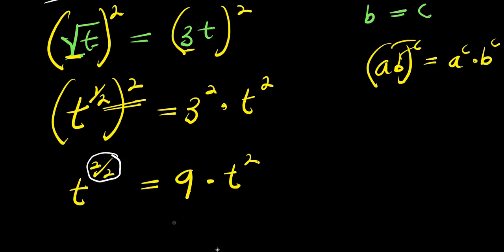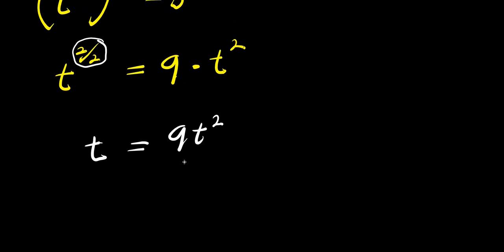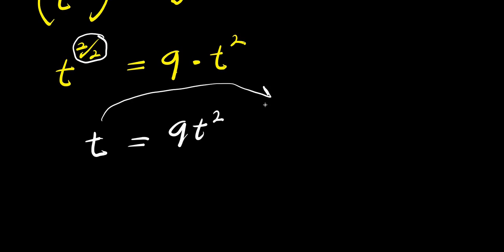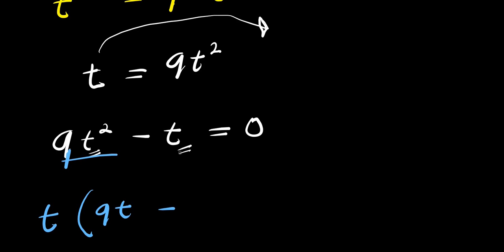Note that 2 over 2 is 1, so the left side gives us t. We have t equals 9 times t squared, that is 9t squared. The next step is to move the t over: we get 9t squared minus t equals 0. There is a t in both terms, so we factor out t: t times (9t minus 1) equals 0.